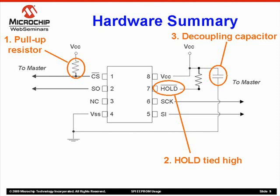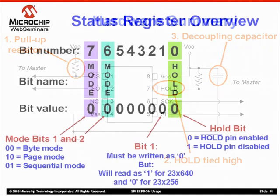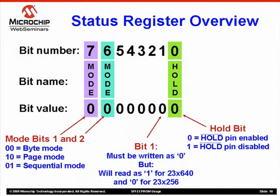For our next recommendation, we'll take a look at the Serial SRAM status register. These SRAM devices use the SPI protocol, which has an 8-bit status register, as shown on this slide. The top row of the table shows the bits numbered 0 through 7, and the next row shows the corresponding names — hold and mode. Notice that Serial SRAM only uses 3 of the 8 bits: 0, 6, and 7. These are all read-write bits, changed with a write status register command, and can be read by a read status register command.